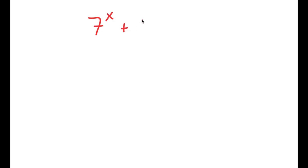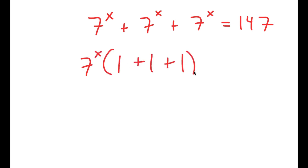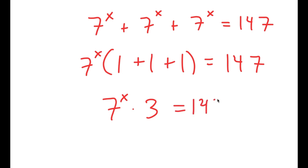In this video, I'm going to solve the equation 7 to the power of x plus 7 to the power of x plus 7 to the power of x is equal to 147. To start, I'm going to factor out 7 to the power of x. So I get 7 to the power of x times 1 plus 1 plus 1 is equal to 147, which gives 7 to the power of x times 3 is equal to 147.